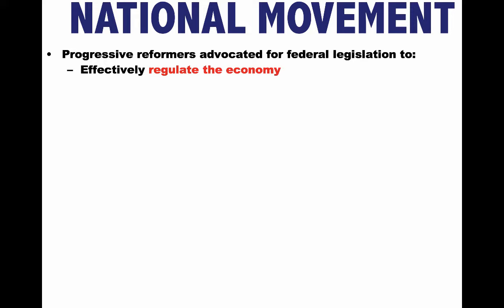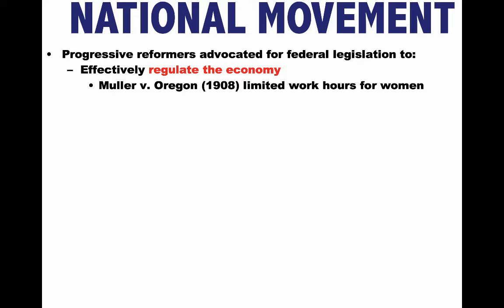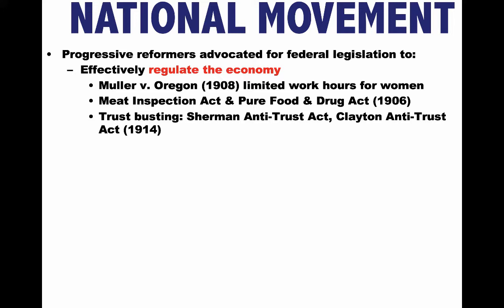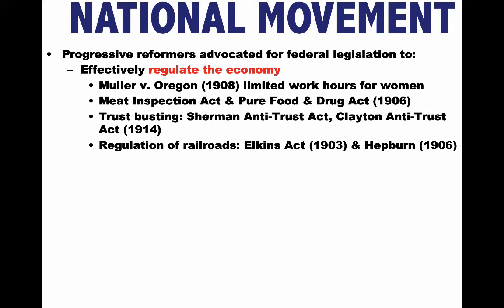Progressive Reformers advocated for federal legislation to effectively regulate the economy. We see this in court cases such as Muller v. Oregon, which limited work hours for women; the Meat Inspection Act and Pure Food and Drug Act, which provided for federal protection of the nation's food and drug supply. Trust-busting was a big part of the Progressive Movement — both Roosevelt and Taft used the Sherman Antitrust Act to break up powerful monopolies, and under Wilson the Clayton Antitrust Act was passed. The regulation of the railroad industry was also addressed: the Elkins Act of 1903 and the Hepburn Act both beefed up the Interstate Commerce Act, which was passed back in 1887 but was relatively weak and largely unenforced.